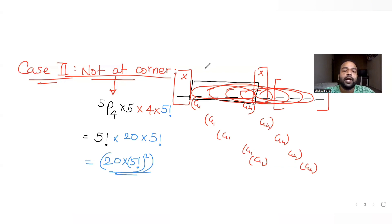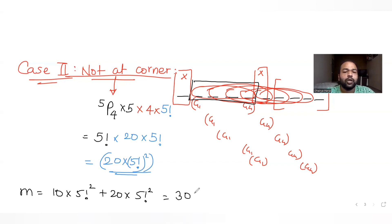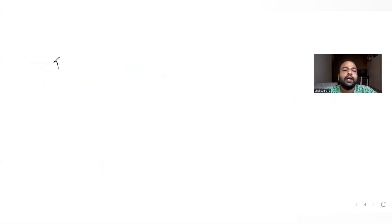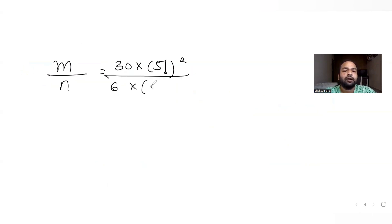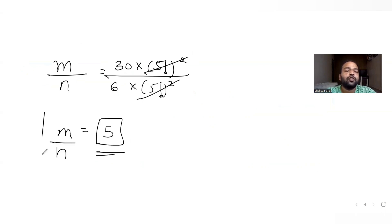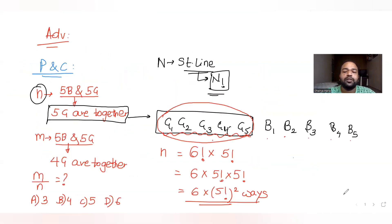Adding both cases: m = 10 × (5!)² + 20 × (5!)² = 30 × (5!)². So m/n = 30 × (5!)² divided by 6 × (5!)². Cancelling, we get 30/6 = 5. The ratio is equal to 5.